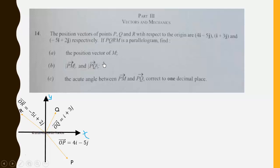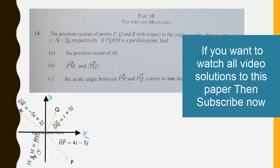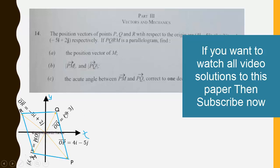We need a fourth vector M so that PQRM will form a parallelogram. We don't know its coordinates, so let it be (x, y) — this is position vector OM. Connecting all the tips of the vectors gives us a shape that is a parallelogram.